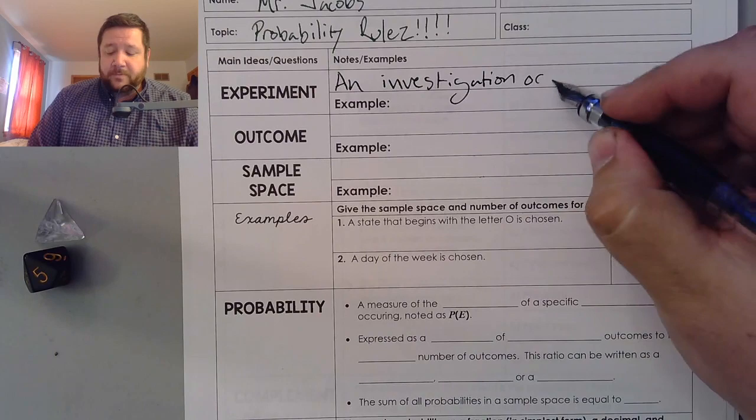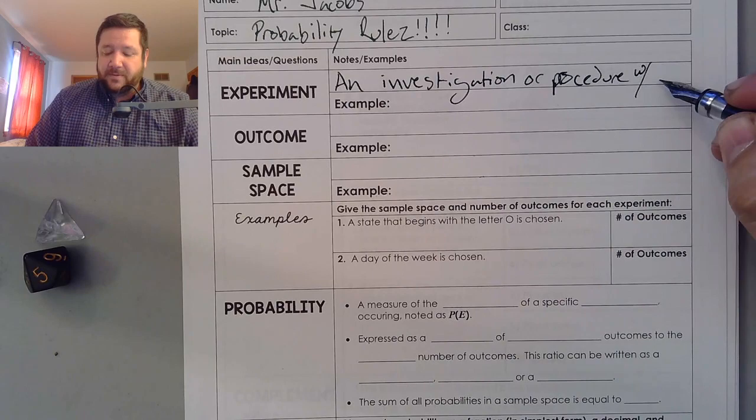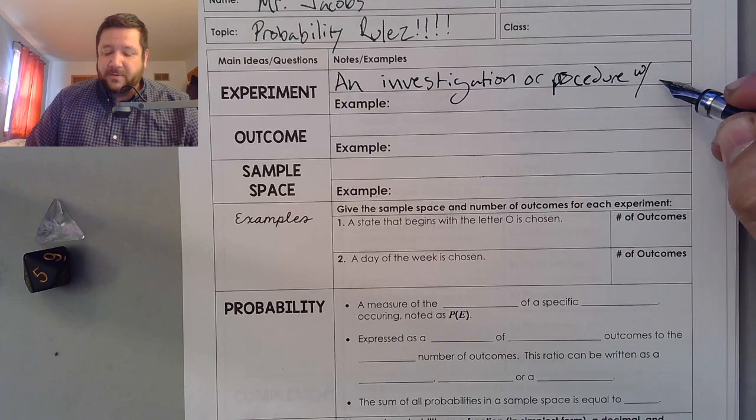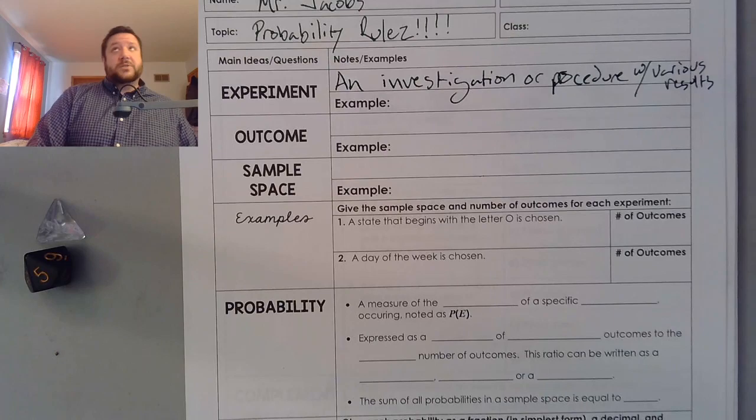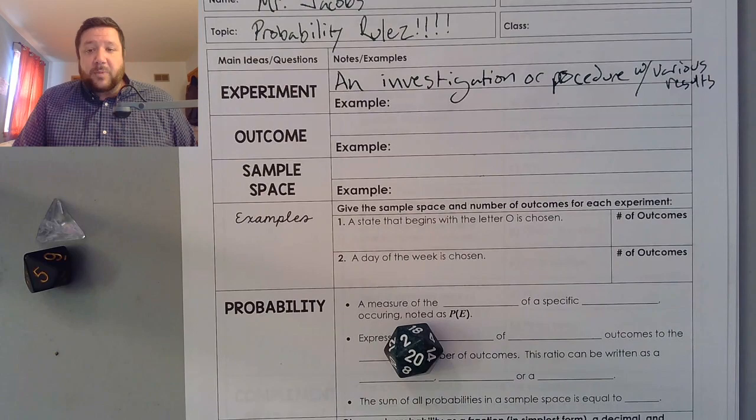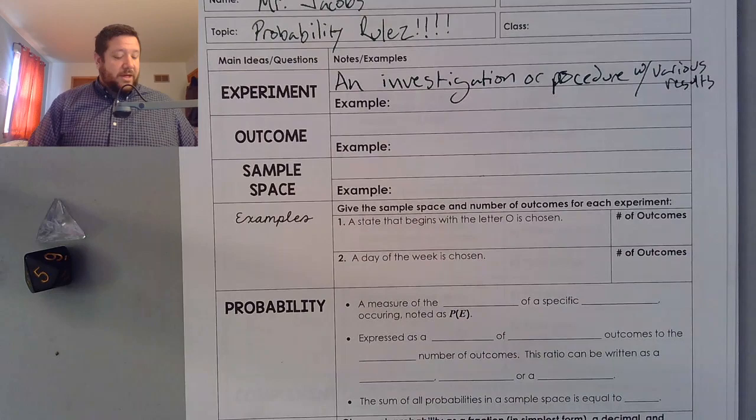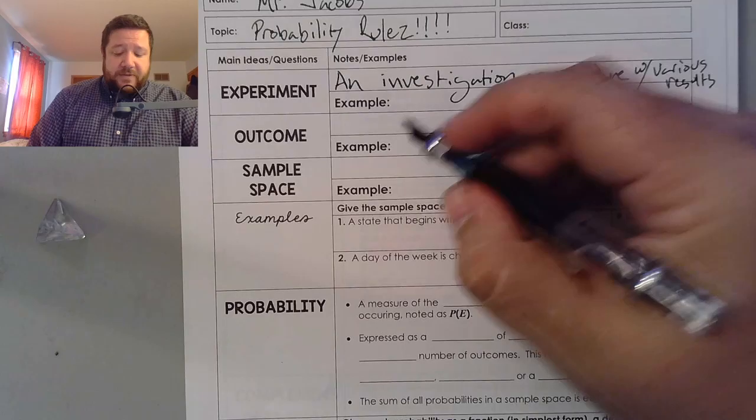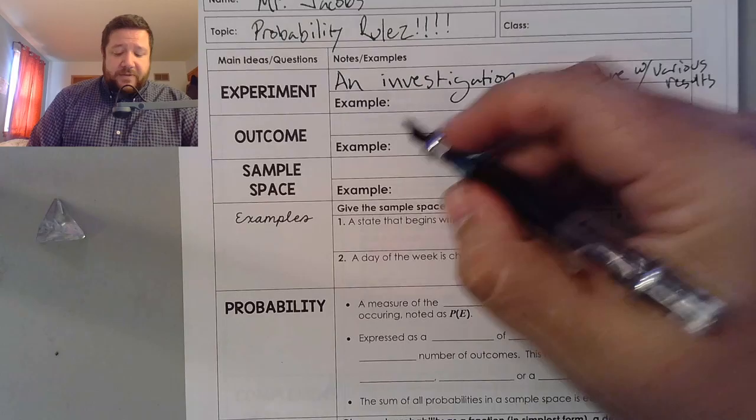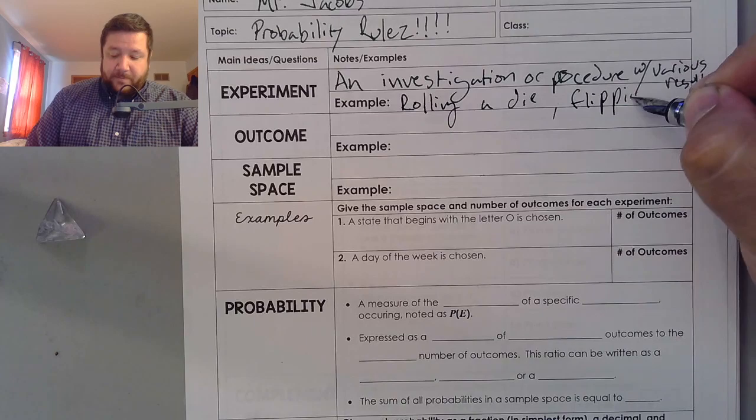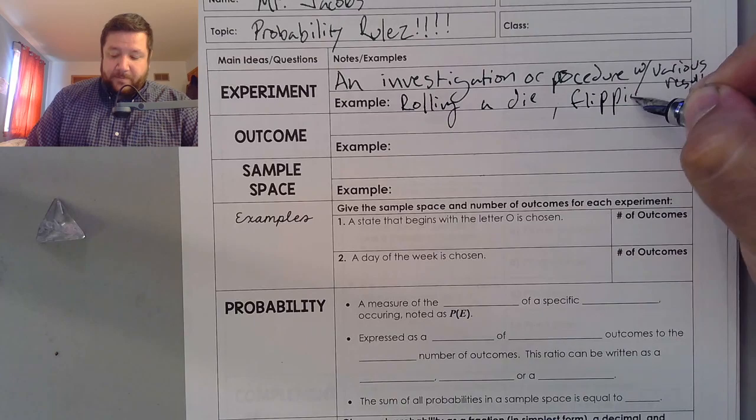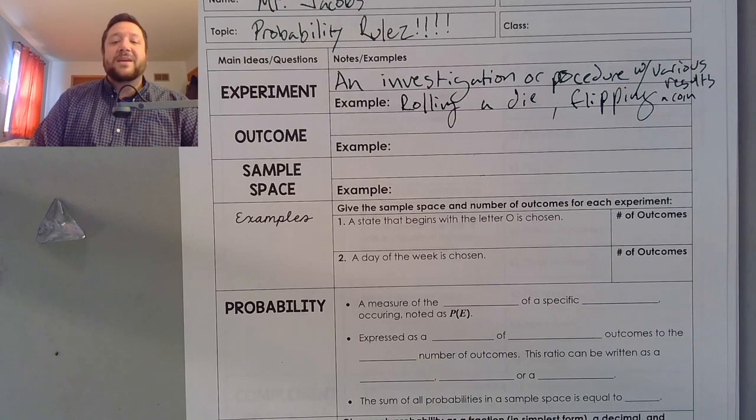An experiment is just an investigation with various results or maybe a procedure. So this is the first thing that's a little bit different, right? If we were in science class, we'd use a scientific method. In probability, I just did an experiment. And in my experiment, I got 20.